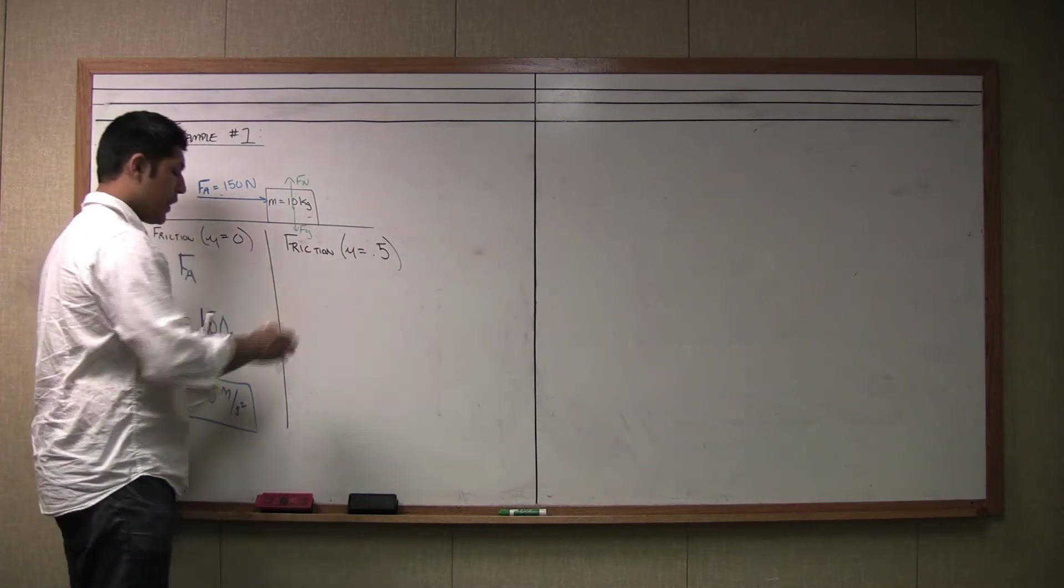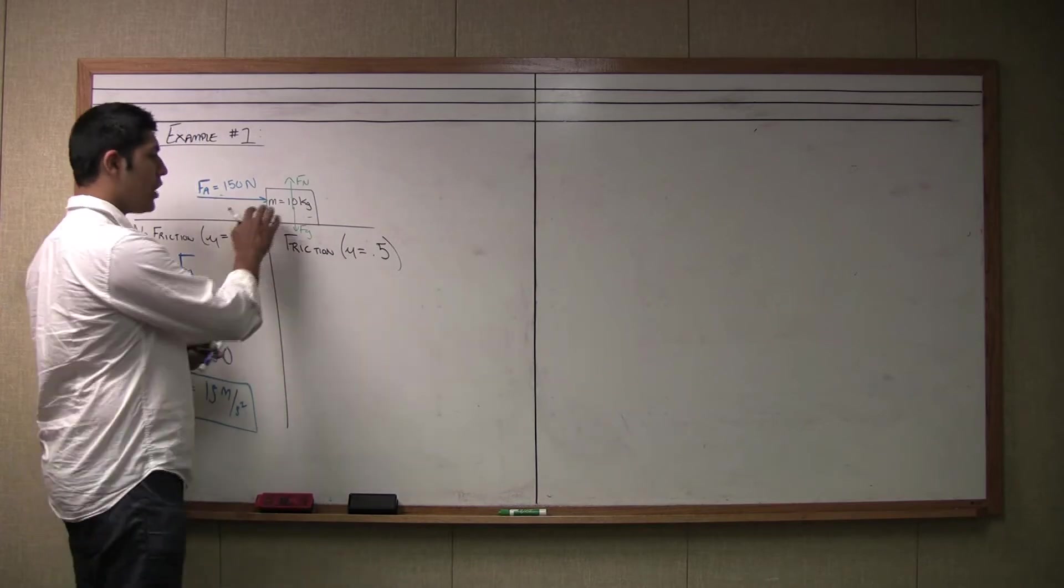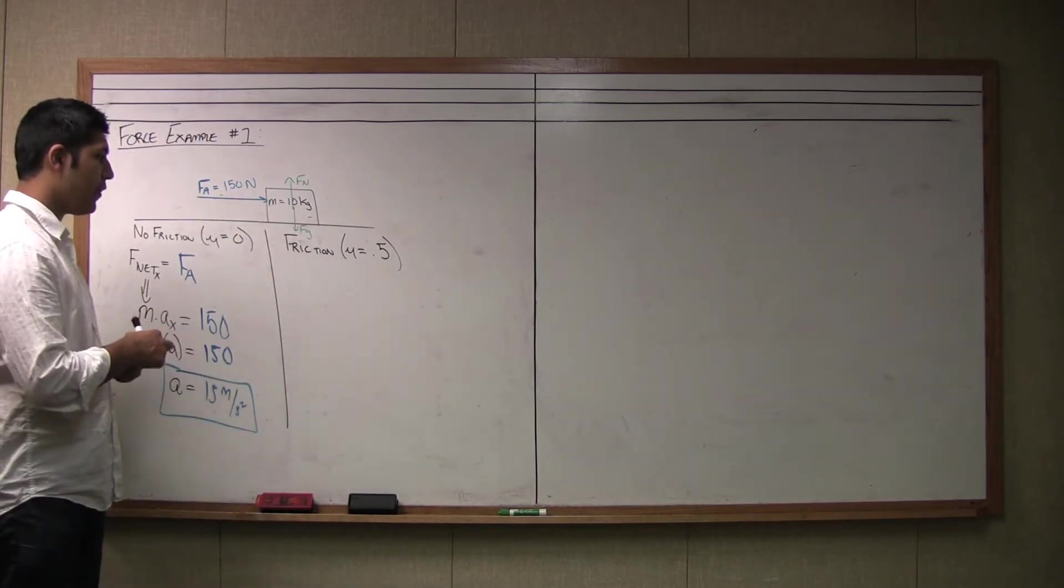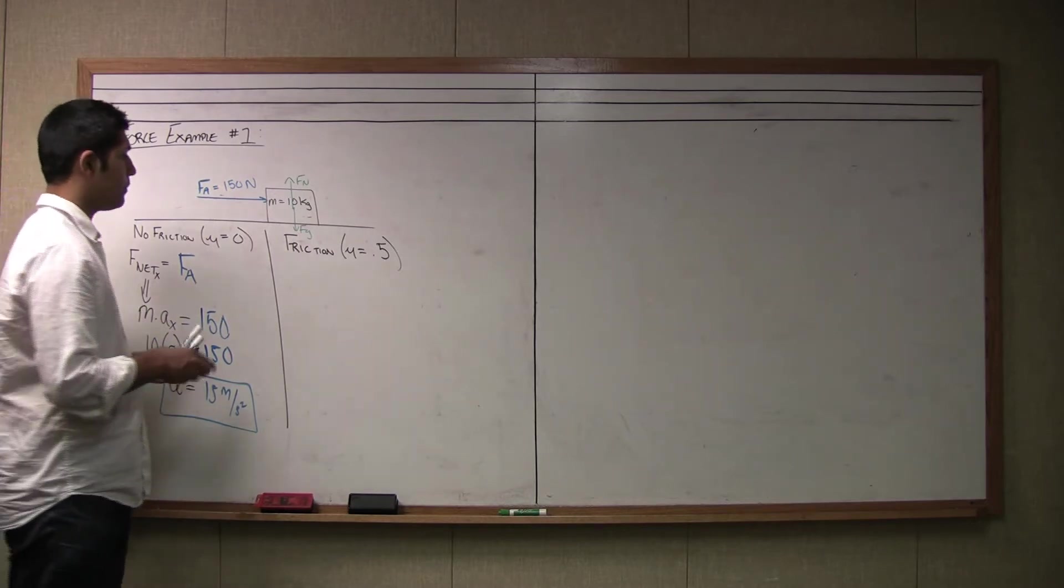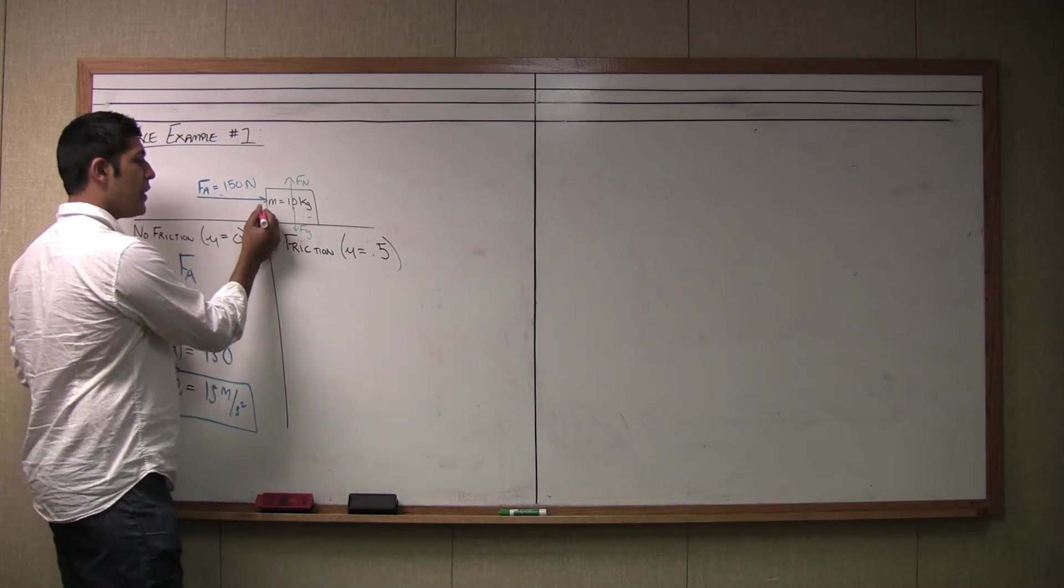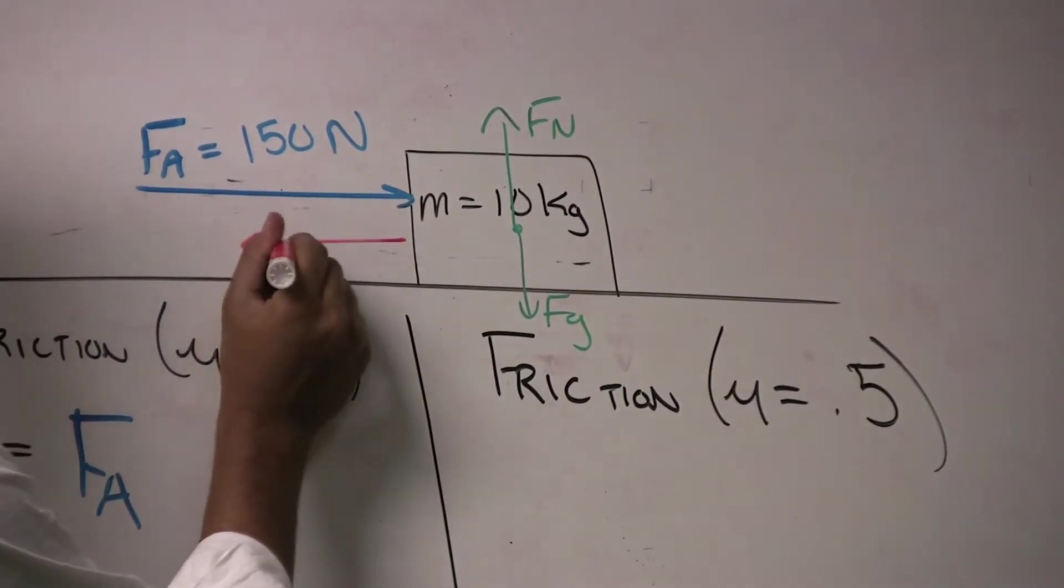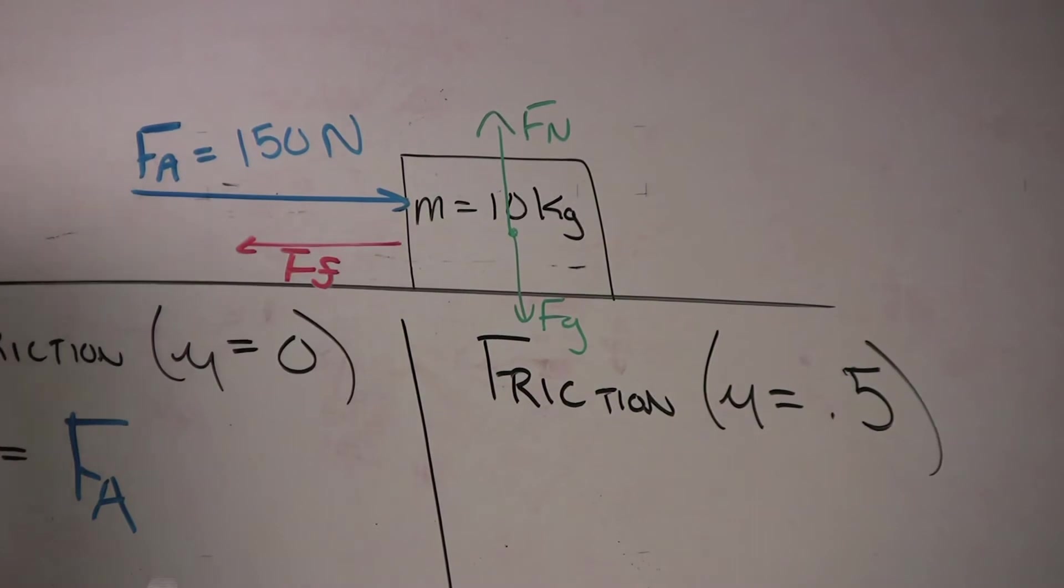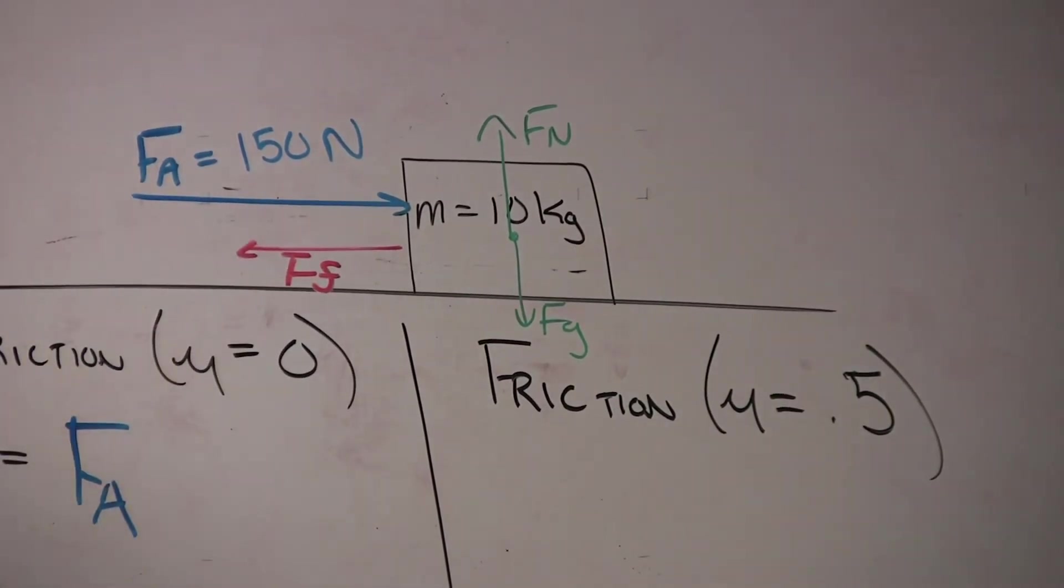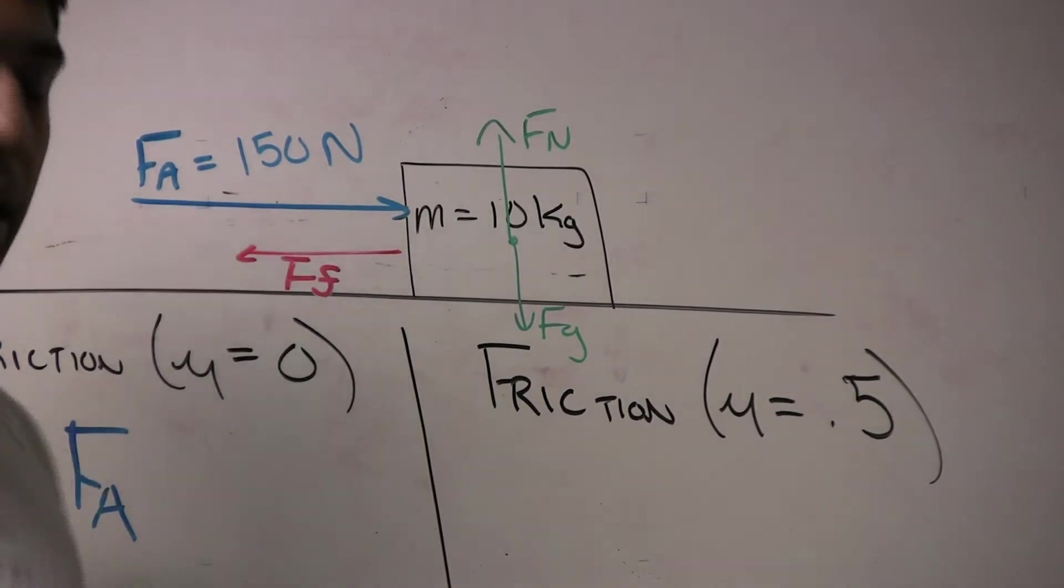When we start adding friction to the problem, we have to make a change to our force diagram. I am going to add the friction vector in red. Friction is going to oppose the motion of the box and therefore the friction vector is going to point to the left. I have the red vector labeled as F sub F. Again, let's go ahead and write our F net equation.